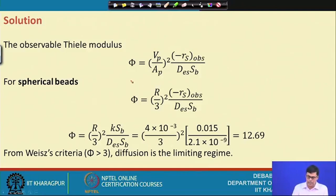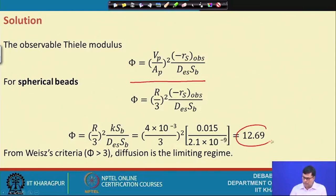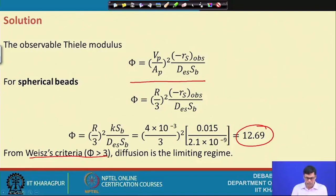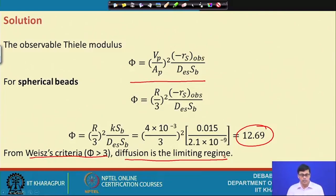Using the observable Thiele modulus formula φ = (V_p/A_p)² × (−r_s observed) / (D_e × S_b), substituting the values gives φ = 12.69. By the Weisz criteria, since φ > 3, this confirms a diffusion-limiting regime. The problem is diffusion controlling, not reaction controlling, so mass transfer is the limiting factor.